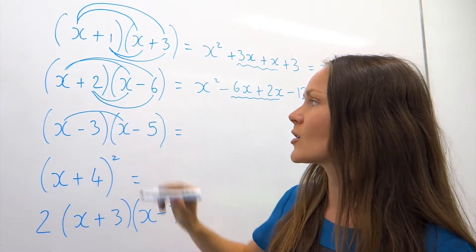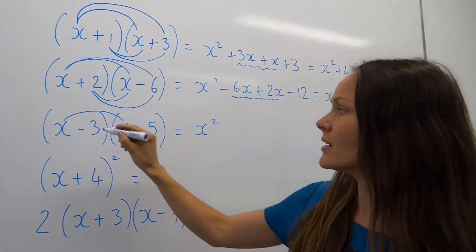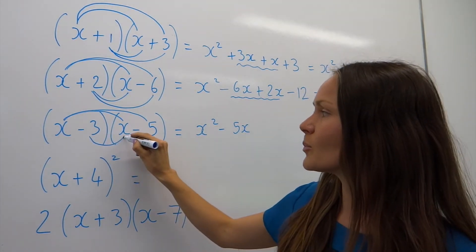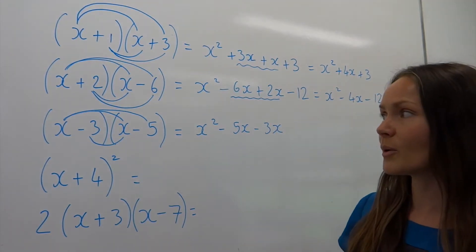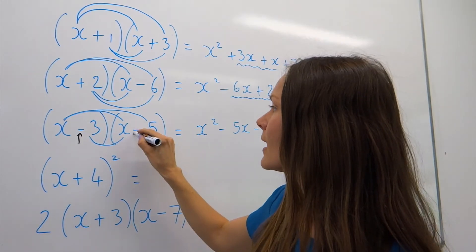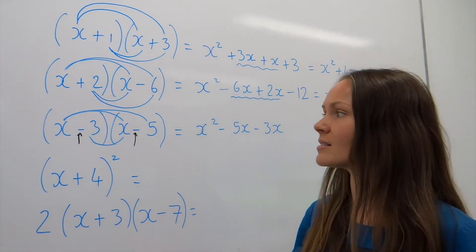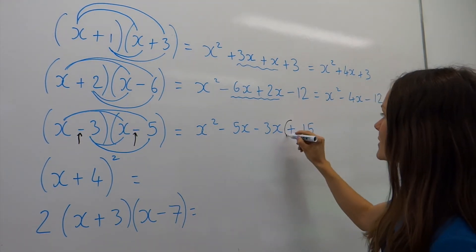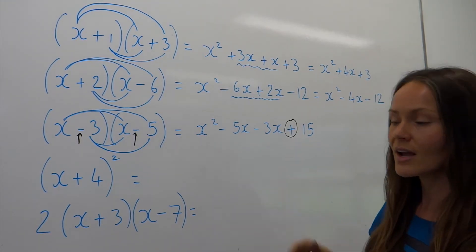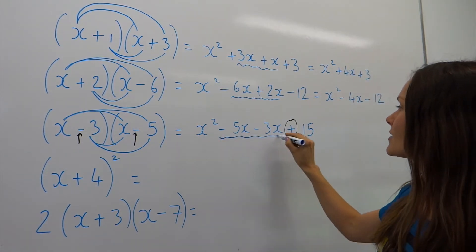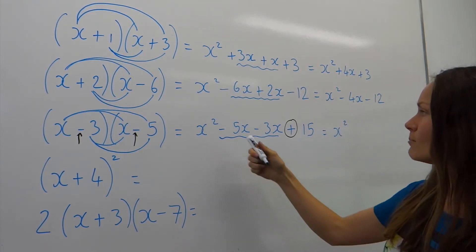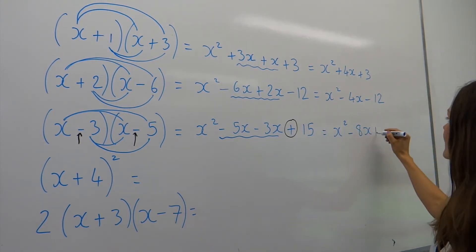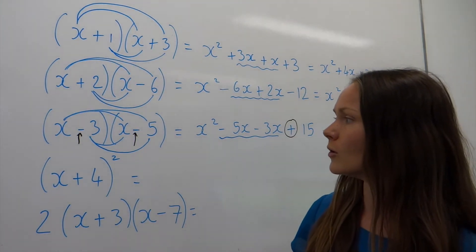Example number three — same as before. x multiplied by x is x squared. Then x multiplied by minus 5 is minus 5x. Then minus 3 multiplied by x is minus 3x. And be careful here — lots of people make this mistake — you've got a minus here and a minus here, and a minus times a minus gives you plus, so minus 3 times minus 5 is plus 15. Watch out for that common mistake. Now simplifying: x squared stays the same, minus 5x minus 3x gives minus 8x, and plus 15 remains the same.